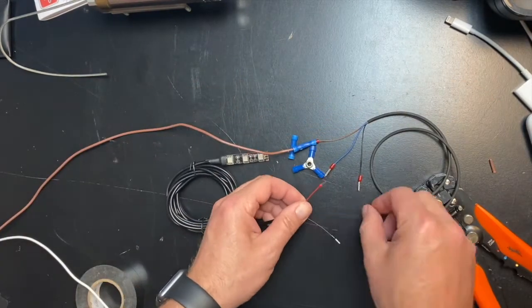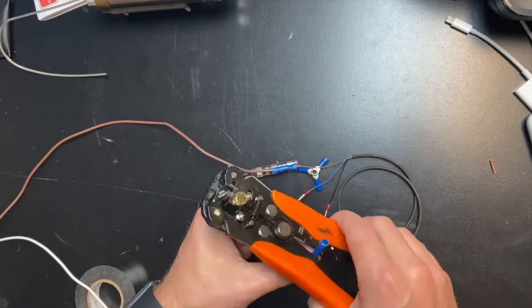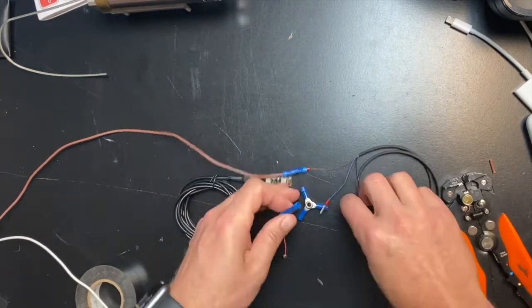Next connect the red wire from the LED light to the black wire on the reed switch using a butt connector.